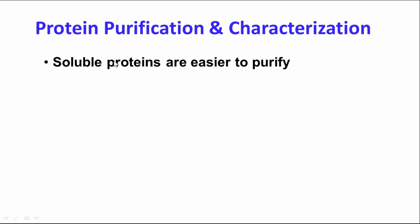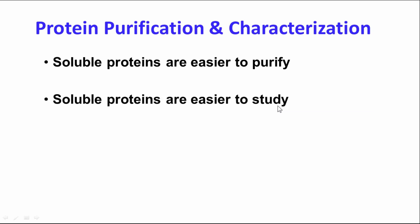In protein purification and characterization, we focus primarily on soluble proteins because we can purify those. Proteins such as collagen, which is part of bone, or elastin that's part of your lung, or keratin that's part of your fingernails, are very difficult to purify because they're not soluble. Soluble proteins are therefore easier to study.